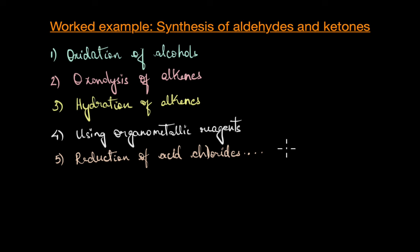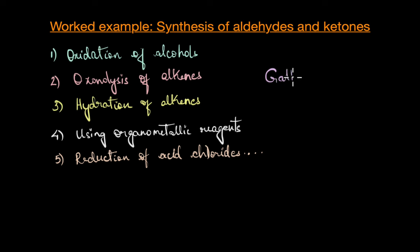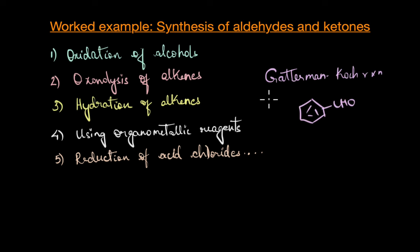In fact, we have many other specific reactions as well that specifically target the synthesis of a particular type of aldehyde. For example, the Gattermann-Koch reaction is used to obtain aromatic aldehydes. Basically, we have a lot of methods by which these compounds can be synthesized.